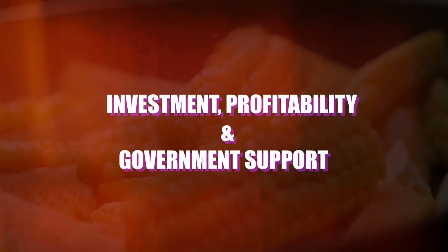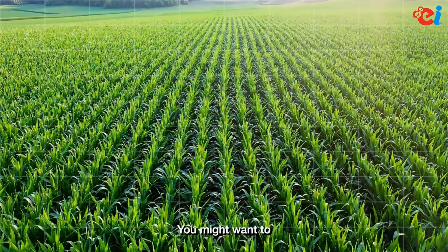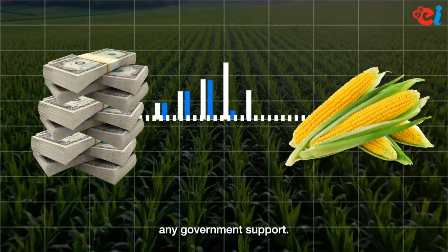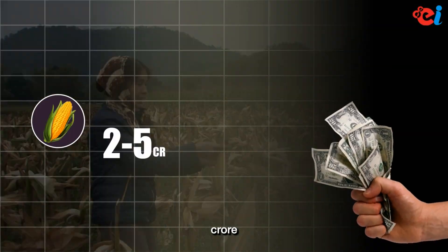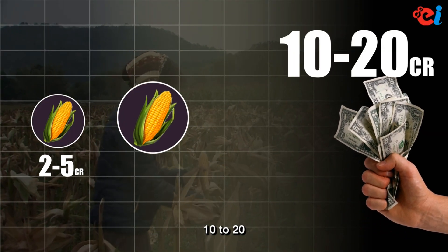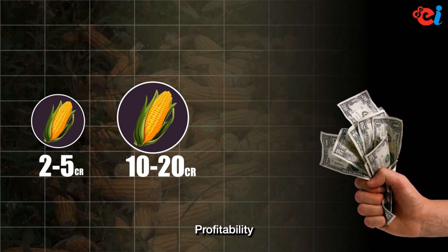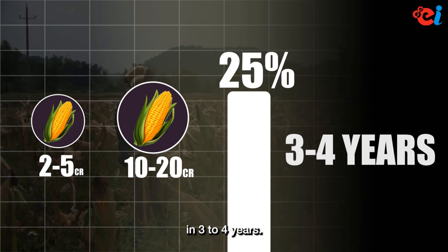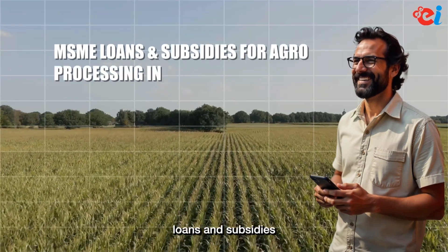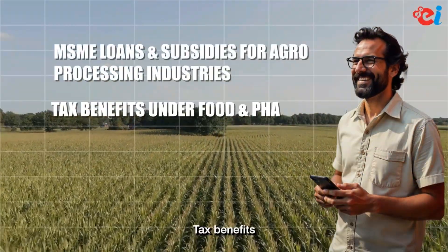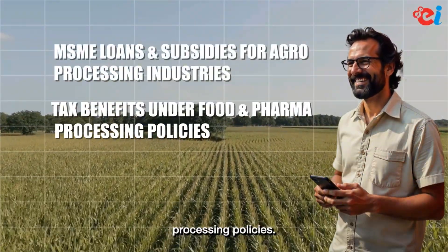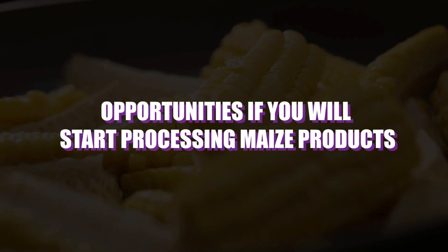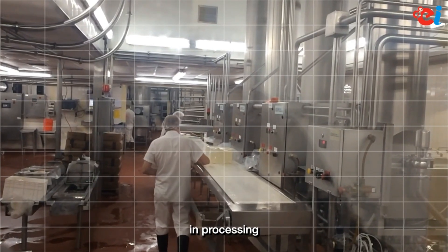Regarding investment, profitability, and government support: a small-scale plant costs 2–5 crore, while a medium to large-scale plant costs 10–20 crore. Return on investment is 20–25% with breakeven in 3–4 years. Government support includes MSME loans and subsidies for agro-processing industries, tax benefits under food and pharma processing policies, and export incentives for starch, sorbitol, and dextrose products.